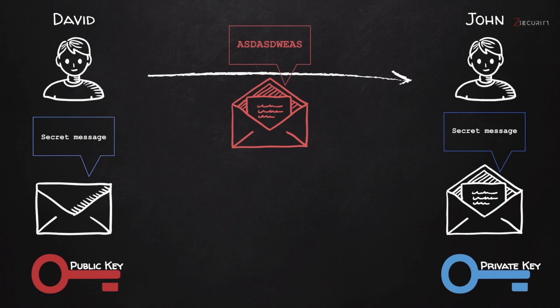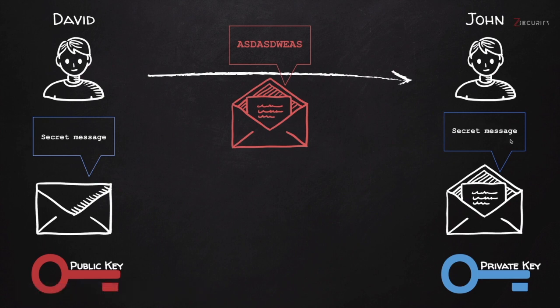So that's really good. The only problem is that there is no way for John to verify that the message they received has actually been sent from David. For this to work, John needs to make their public key public, so getting John's public key is easy — he could have it in his email signature, in a forum signature, or publicly shared because he wants people to send him encrypted messages.